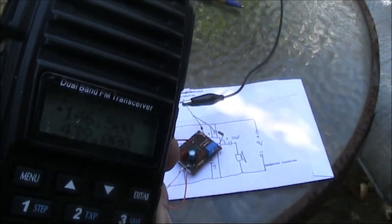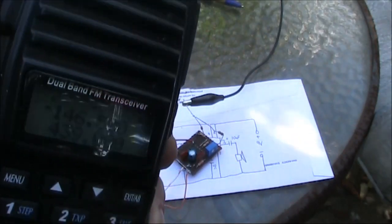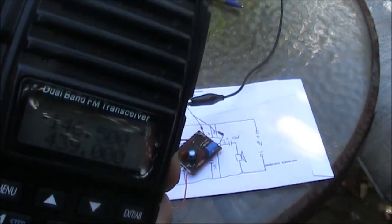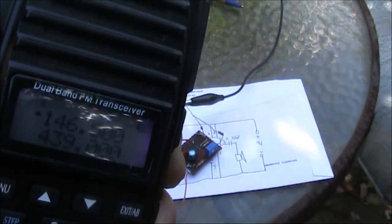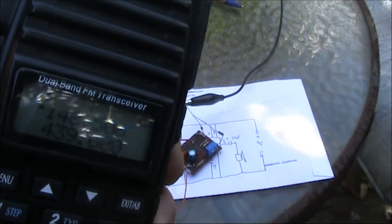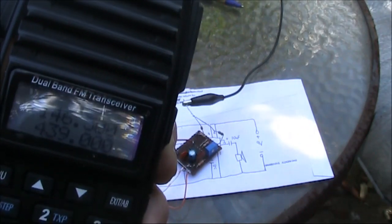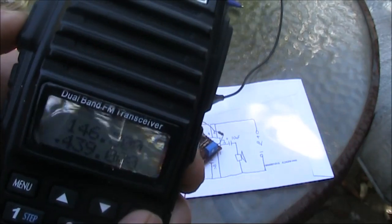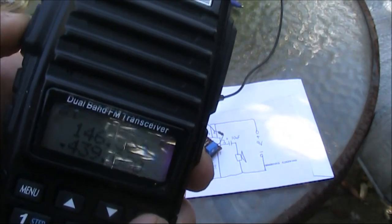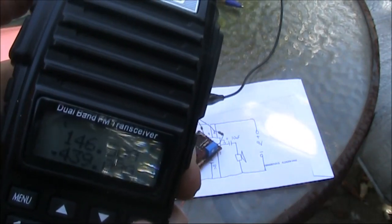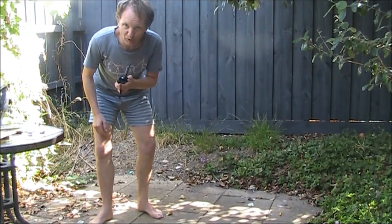Now we'll try some RF. If it works, we'll hear a tone from the speaker. This is on low power setting, transmitting on 2 metres. We're trying 70cm, 439 MHz, and it's picking that up as well. We'll try some longer distances.